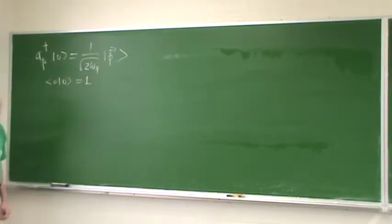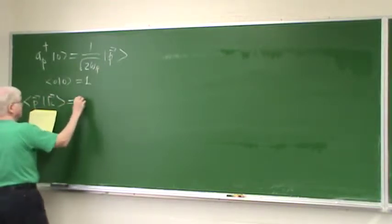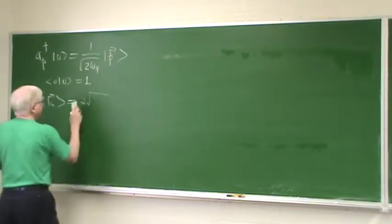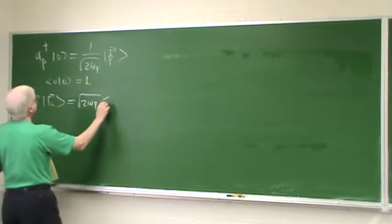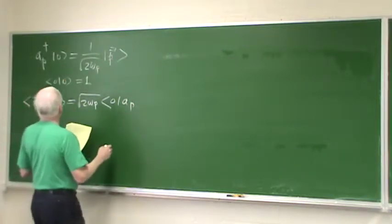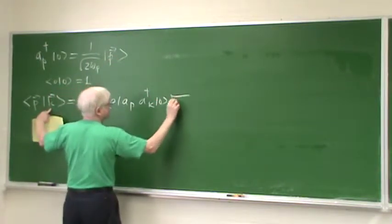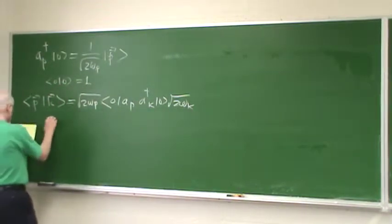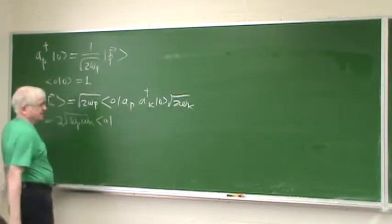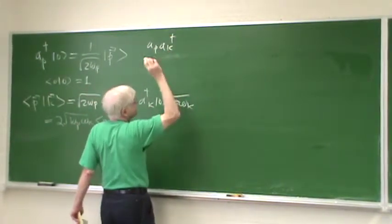We take the norm of the vacuum to be 1. But now when we take the inner product of two states k and p, what do we get? We get: taking the adjoint of the equation, this would be the square root of 2 omega-p times 0, a of p.